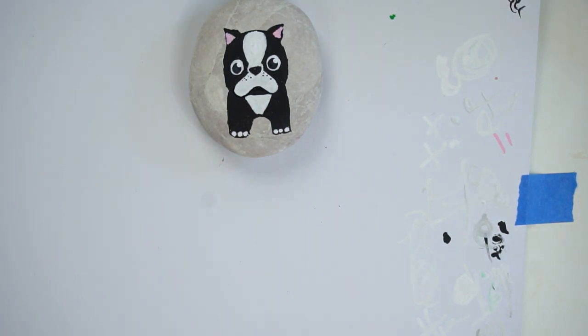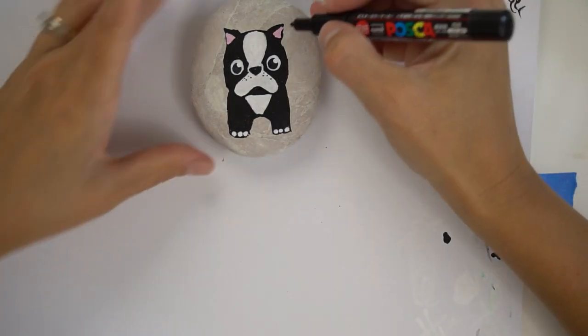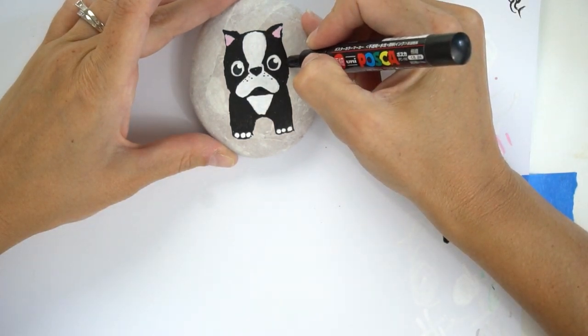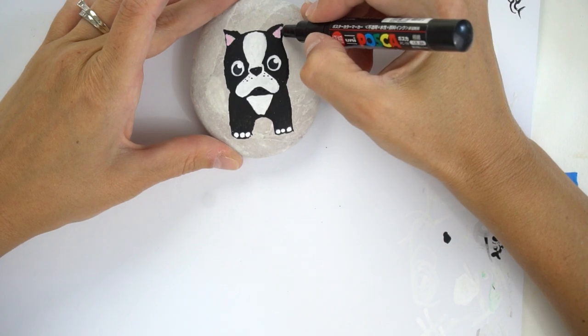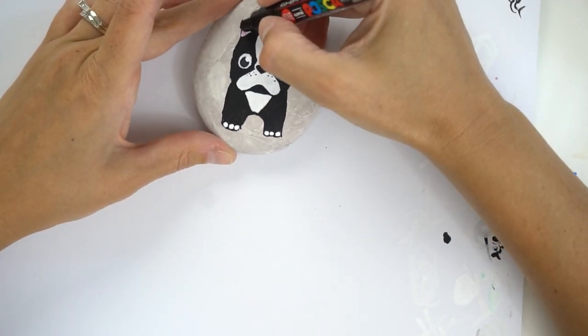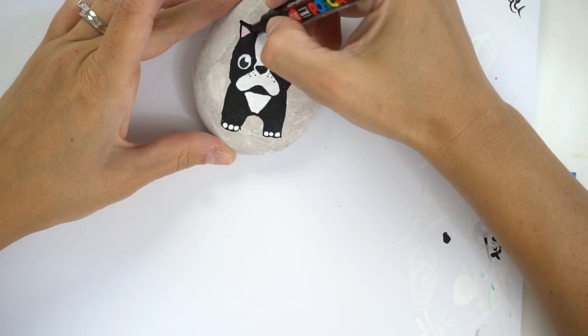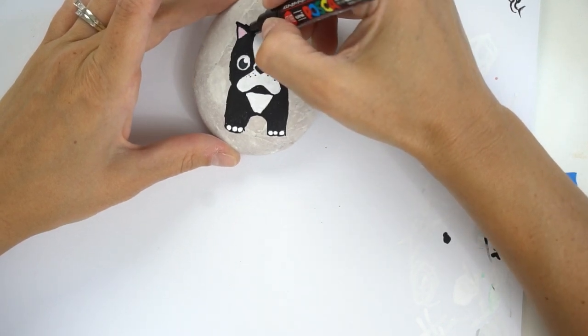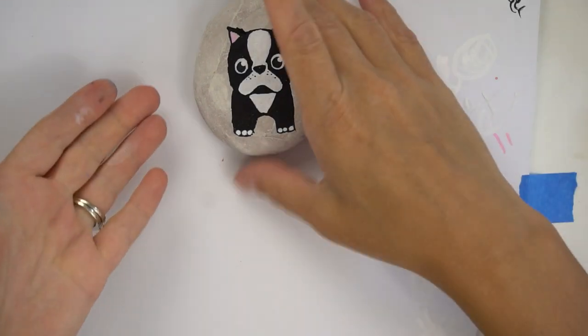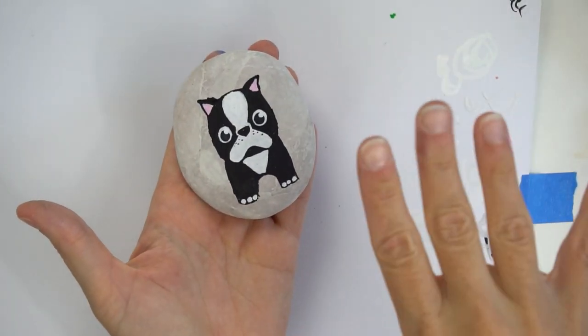So there he is - super cute! Like I said, pretty easy once you know how to block out the shapes. Of course I'm going to fine tune a few things here and there, but I hope you enjoyed this tutorial. Make sure to check out the rest of our animal rock playlist - we've got lots of fun and easy rocks for beginners. I'll link to that here at the end. Subscribe so you don't miss any of our fun tutorials as they're new and being released. Bye!